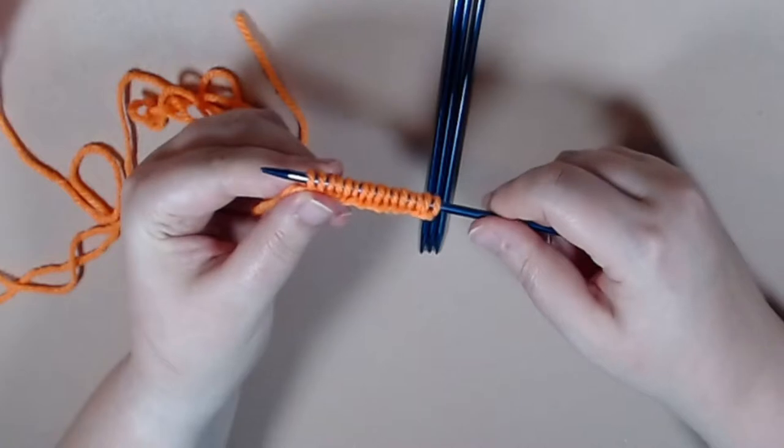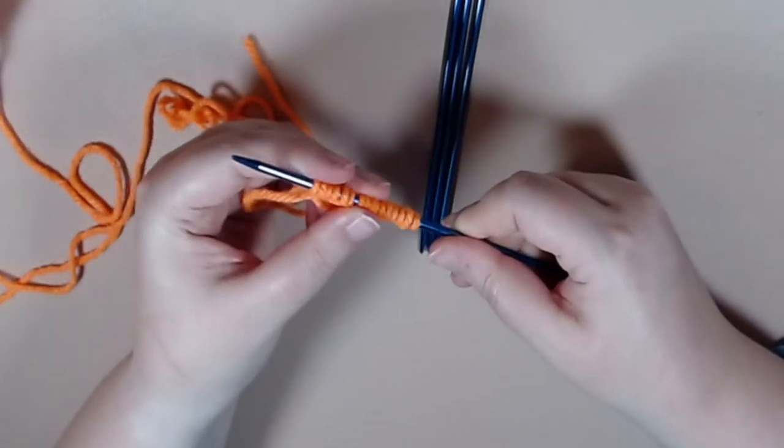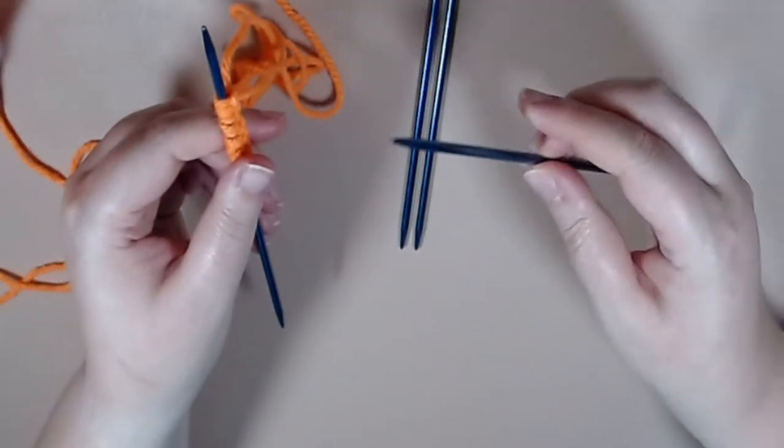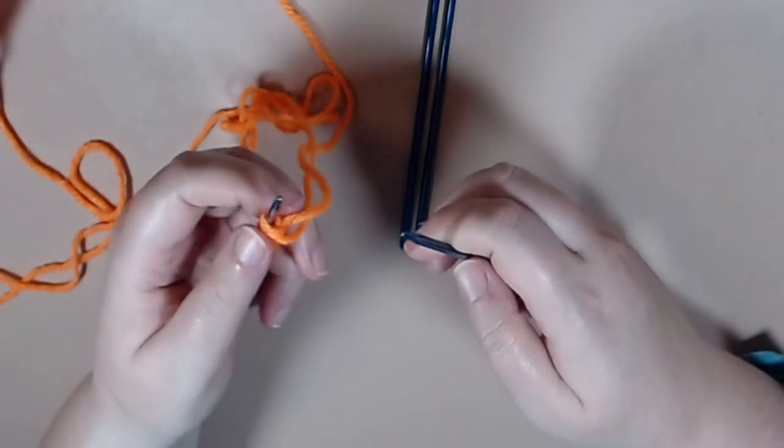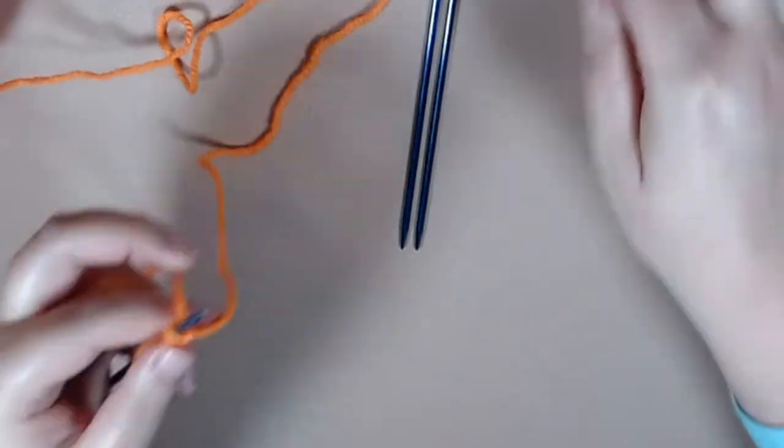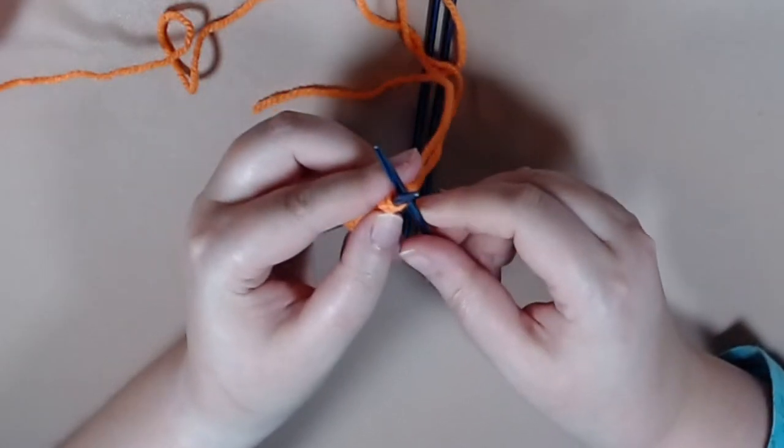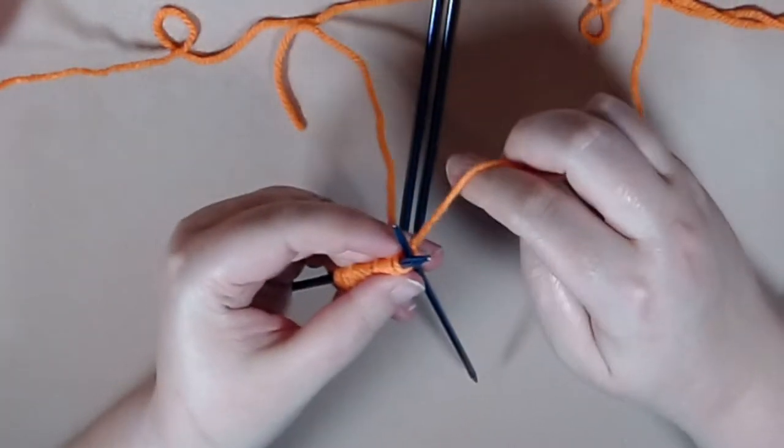Once you have all of your stitches on your double pointed needle, you're going to start off by grabbing your second double pointed needle. Now in some cases you'll use four, you can use six, it just depends on the size of your work, but for this video we're just going to do four. Total double pointed needles will be needed.